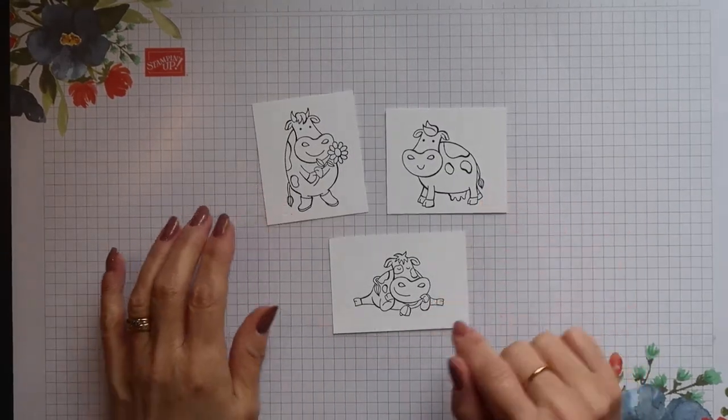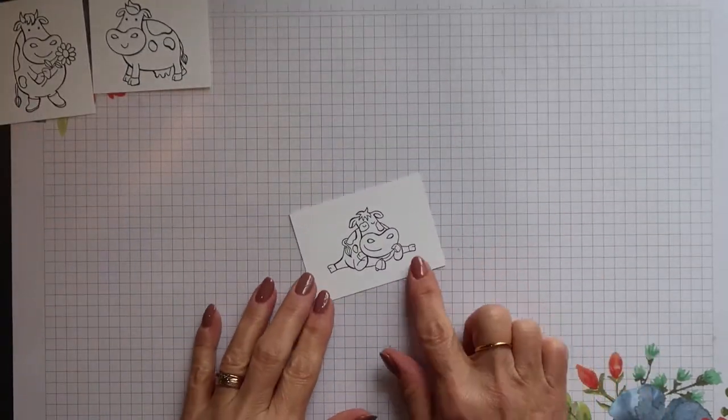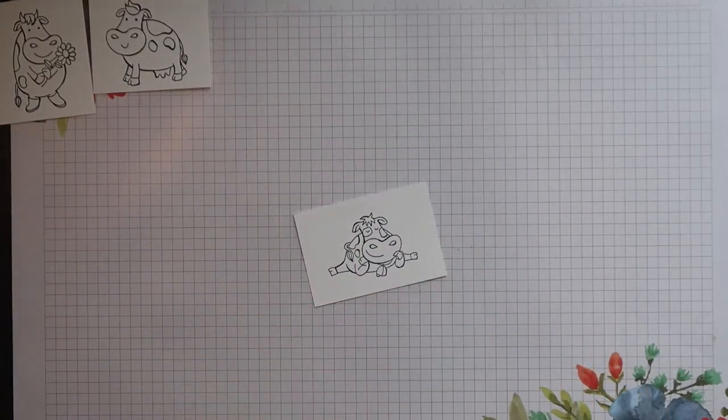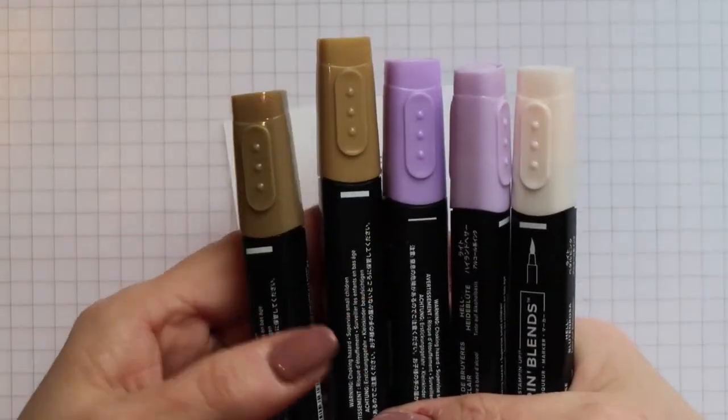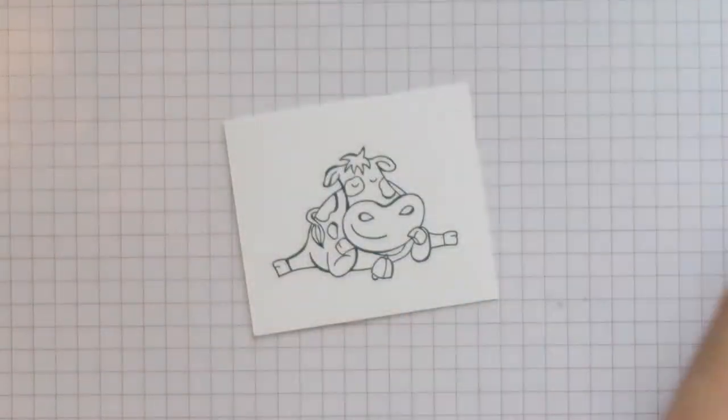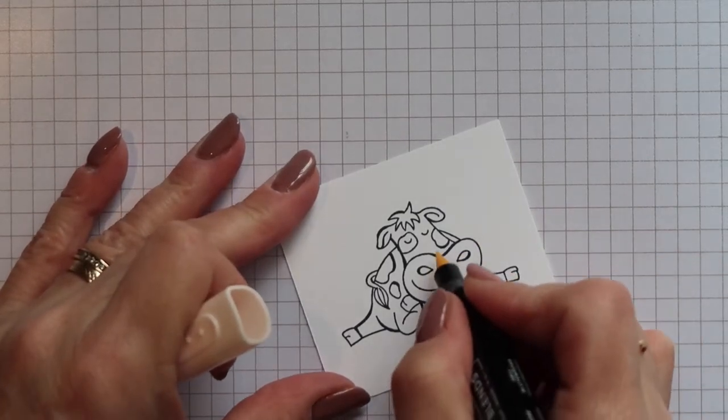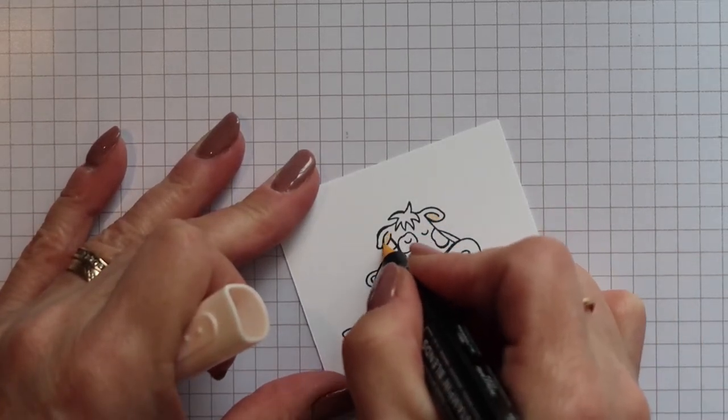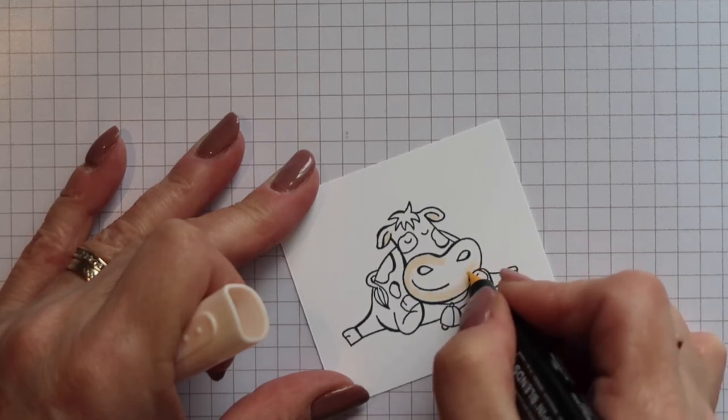I'm going to use the Stamping Blends alcohol markers to color these images but I'm just going to do one on camera. I'm going to be using Soft Suede, Highland Heather and the Light Petal Pink. Now I'm going to start with the Petal Pink and I'm going to color the inside of the ears and also the front portion of the face.